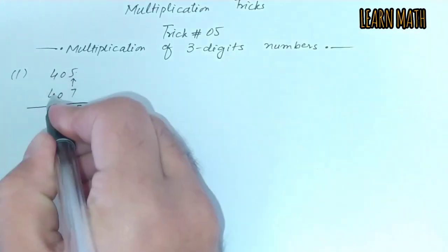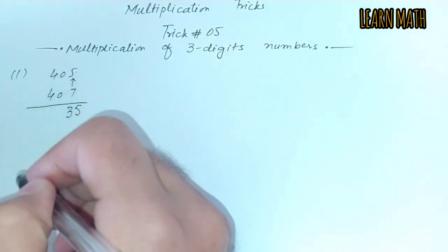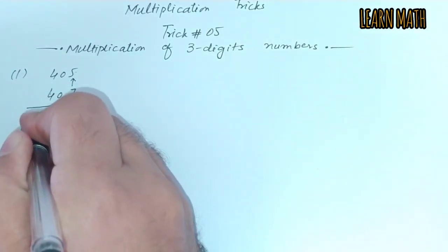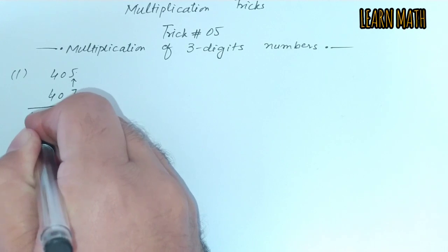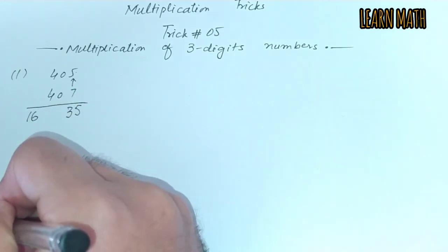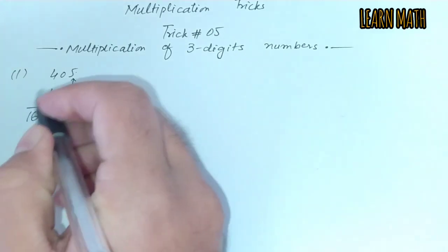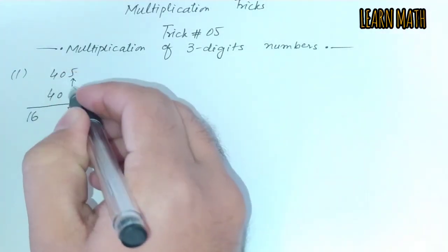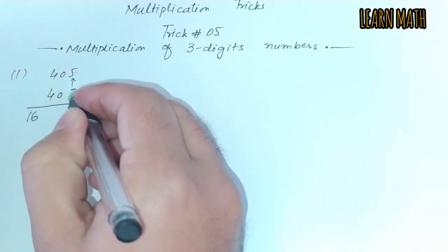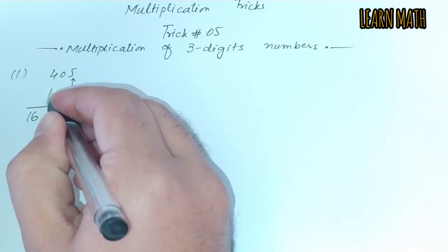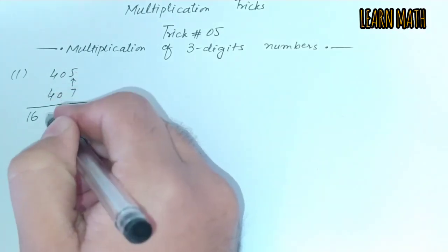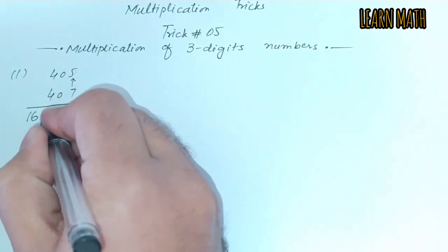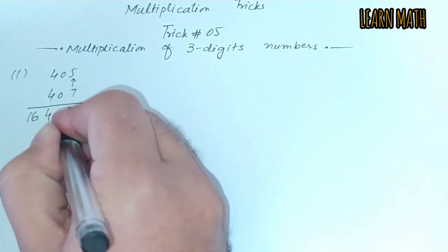Then we will multiply 4 into 4, which is 16. The third step is we will multiply 4 with 7, which is 28, and 4 with 5, which is 20. We will add them, that is 48.